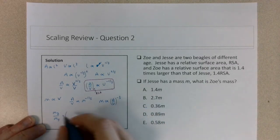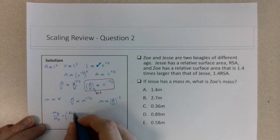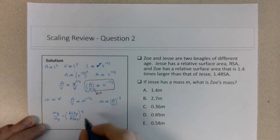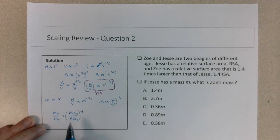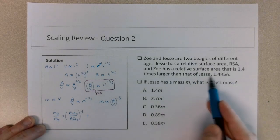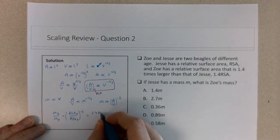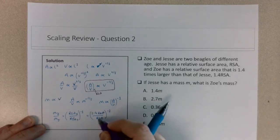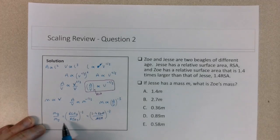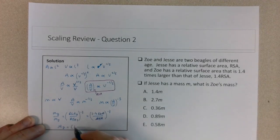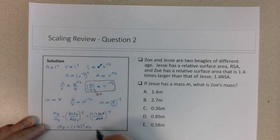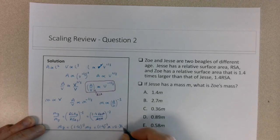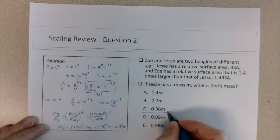So I can set up the expression, and I'll use RSA. This will be RSA for Zoe over the RSA for Jesse raised to the negative three. So if we're told that Jesse has a relative surface area of RSA and then Zoe has an RSA of 1.4, this will be 1.4 RSA over RSA raised to the negative three. And you can just cancel out those relative surface areas. So I can state here that the mass of Zoe is equal to 1.4 raised to the negative three times the mass of Jesse, which is just M in the problem. So this is 1.4 raised to the negative three times M, which is 0.36M. So that gives us choice C. That's the correct answer.